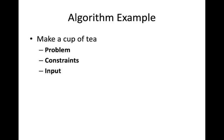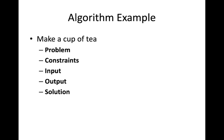Next, find the inputs: to make a cup of tea you need tea powder, milk powder, sugar, water, vessels, and a stove — these are the inputs. The output is a cup of tea. The solution involves mixing all the ingredients and boiling them. The key idea is: identify the input, identify the required output, and figure out how to reach that output from the input.